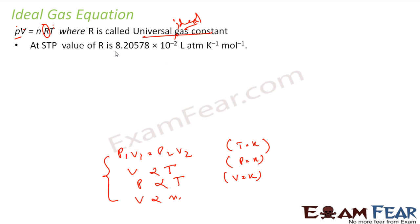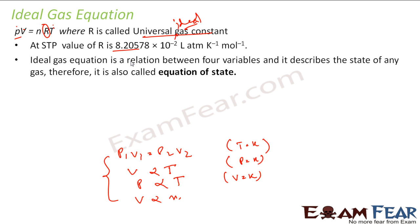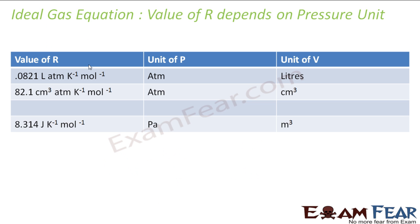So at STP, the value of R is 8.2 times 10^-2 liter atm per Kelvin per mole. And the ideal gas equation is nothing but relation between the four variables and it describes the state of gas, the equation of state. We will see that the value of R, we have different values of R, so we will explain that in the next slide.